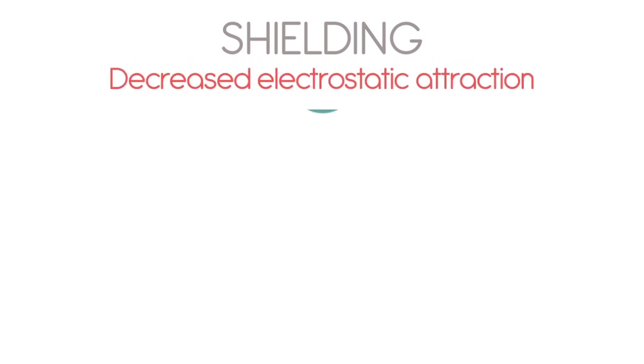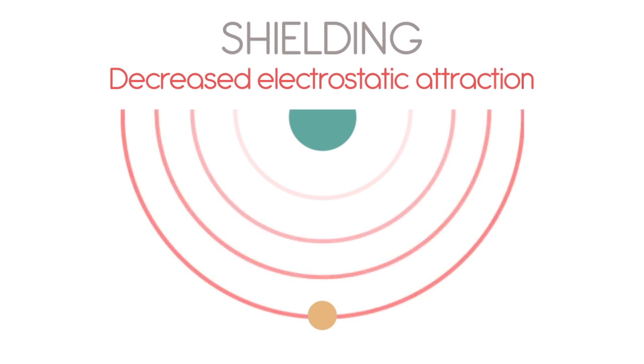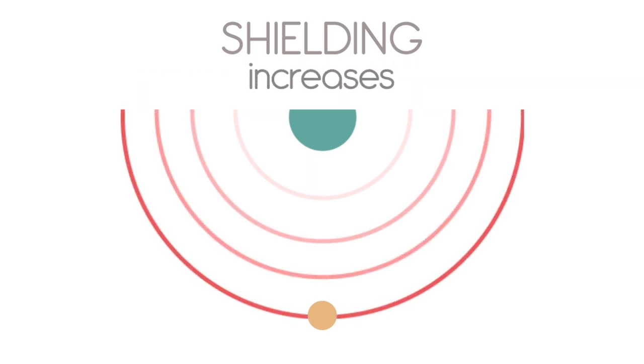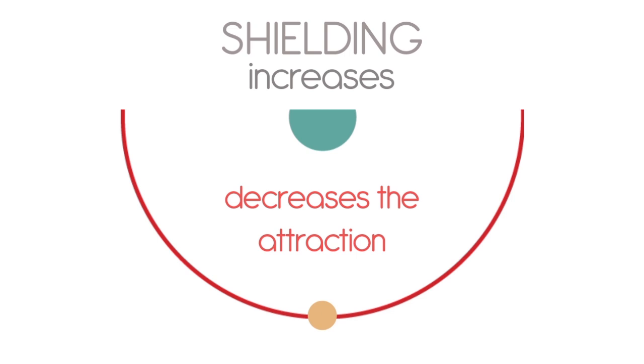Shielding is defined as the decreased electrostatic attraction between the nucleus and the outermost electrons due to the presence of additional electron shells. Shielding increases, which again decreases the attraction for the outer shell electron.